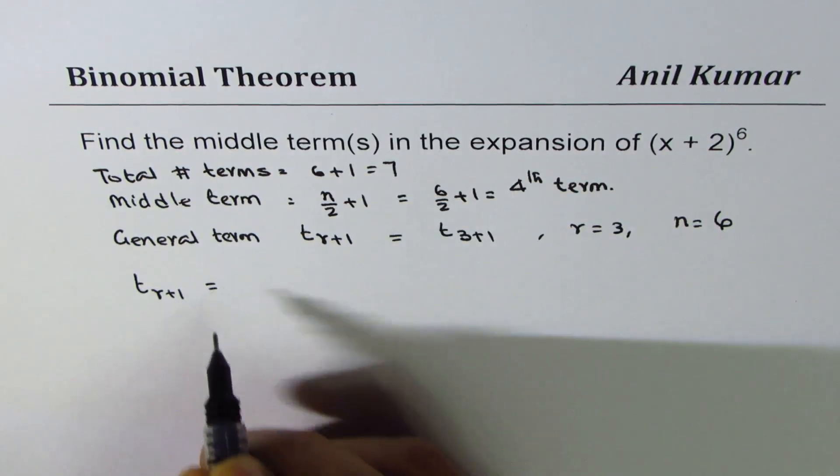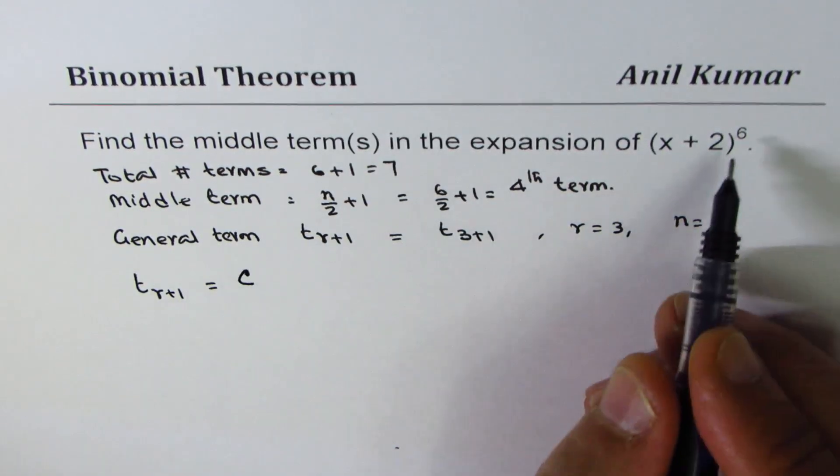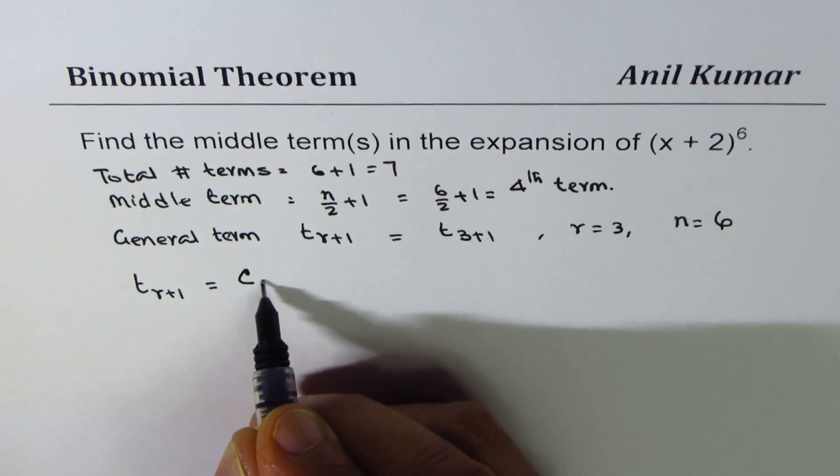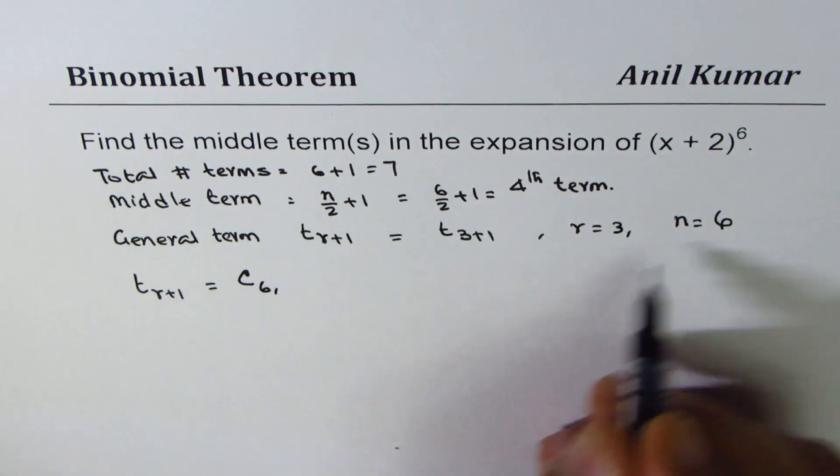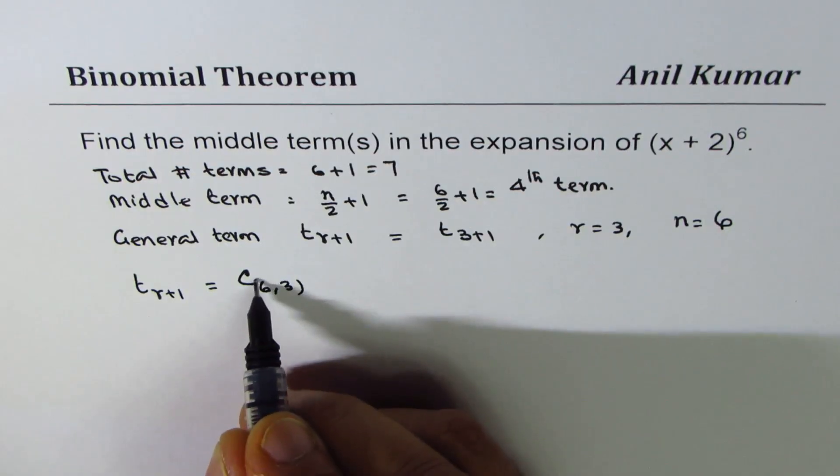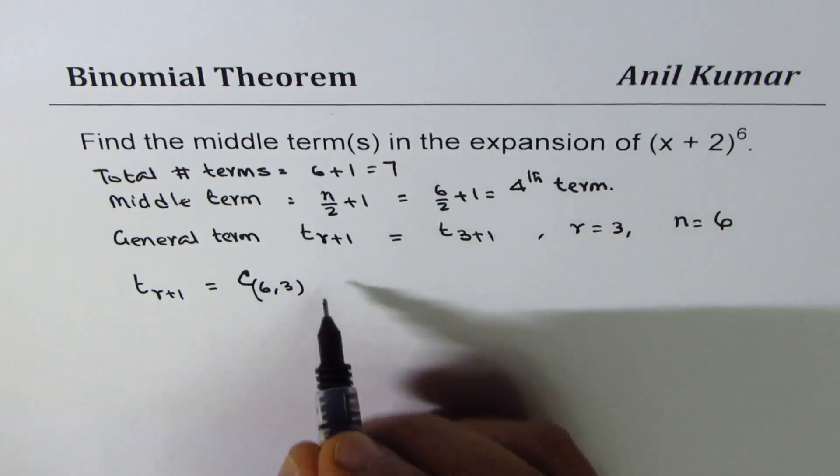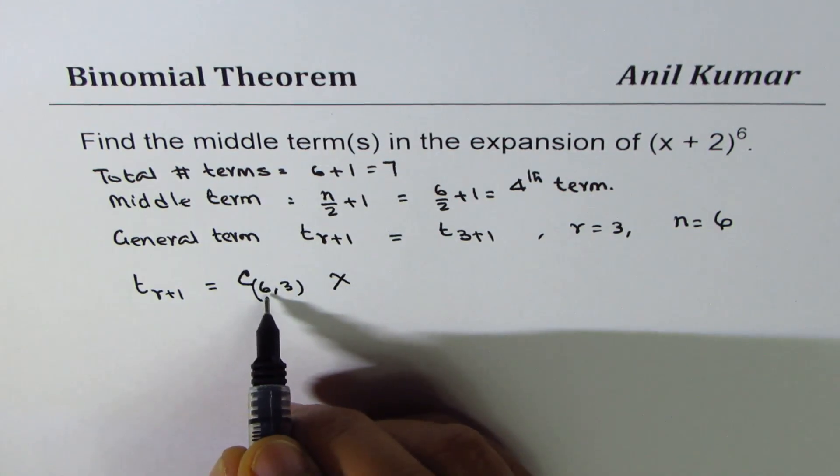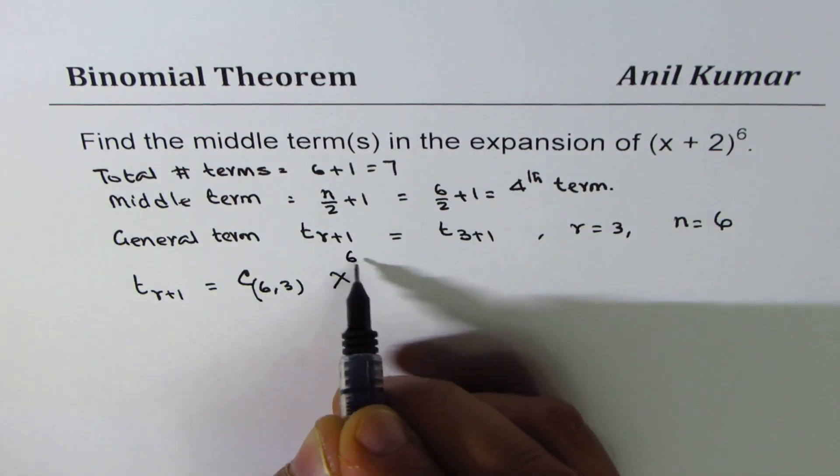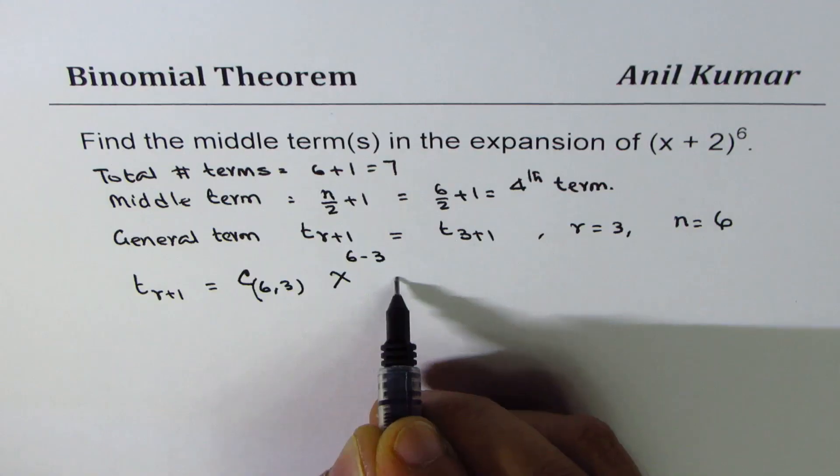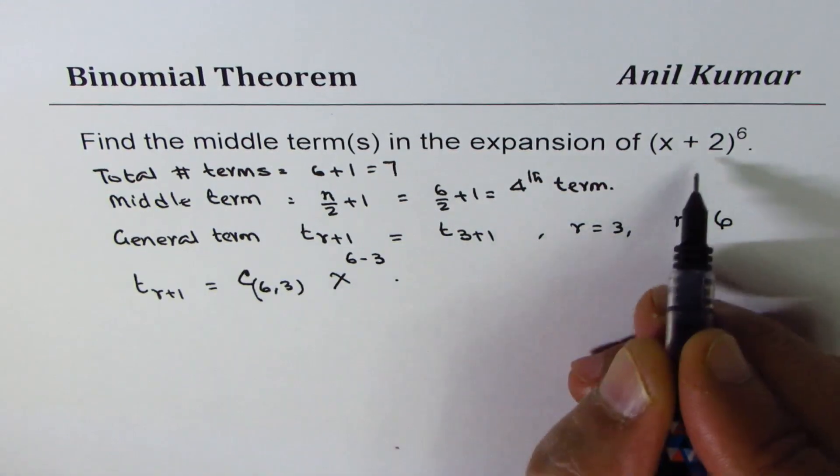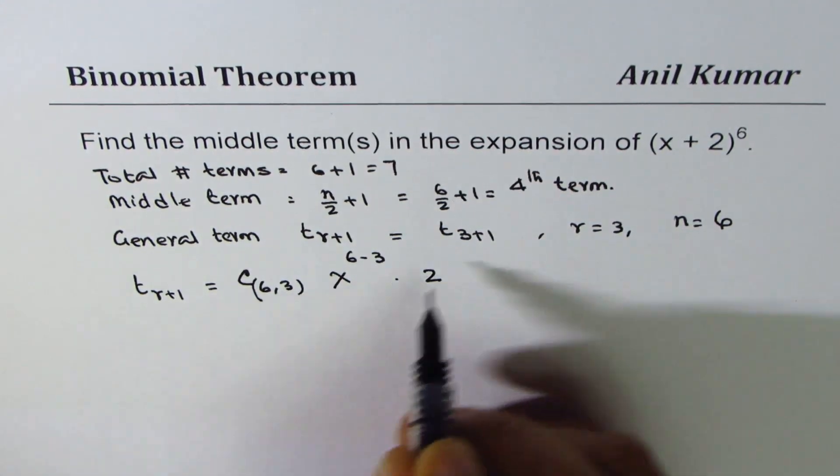T_r+1 will be C(6,3) times x to the power of 6 minus 3, times 2 to the power of 3.